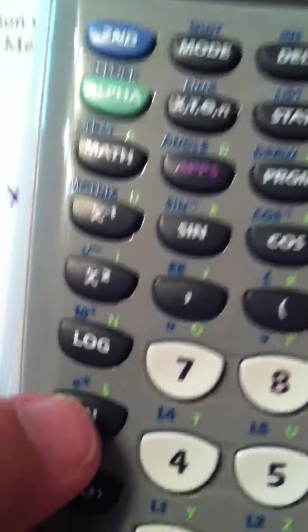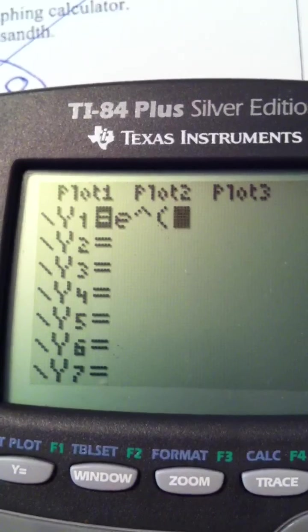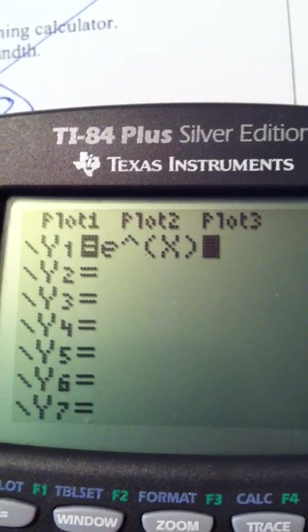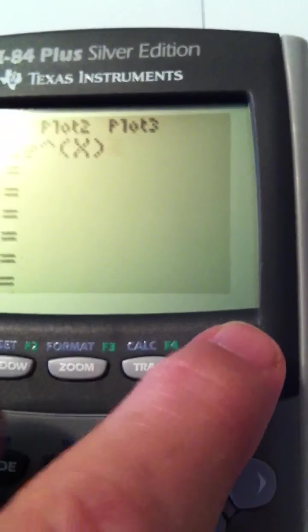I'm going to go above the natural log function, which is Euler's function, by hitting second natural log, and that gives me e raised e caret, and then of course I'm putting in an x. And I'm closing parens. E raised to the x power. Y equals e raised to the x power is Euler's function.